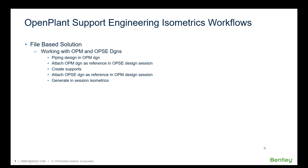Starting with the file-based solution: in our Connect Edition file-based solutions, you can work with OpenPlant Modeler DGN and do the piping design. Attach that DGN as a reference in your OpenPlant Support Engineering design session and then create the supports — all the piping information is readable and recognizable when you're creating the supports. Once you're done, you can attach the OpenPlant Support Engineering DGN as a reference in the Modeler design session, generate your in-session isometrics, and post those isometrics to ProjectWise, ProjectWise Share, or wherever your shared isometric folder is located.